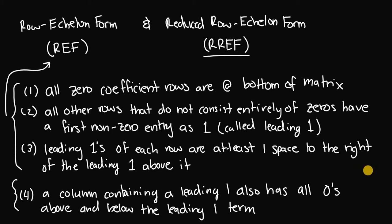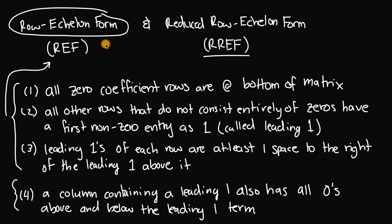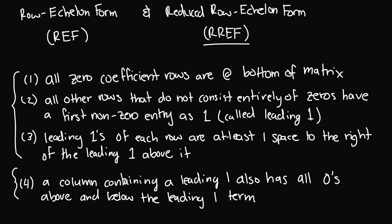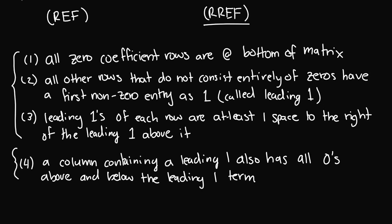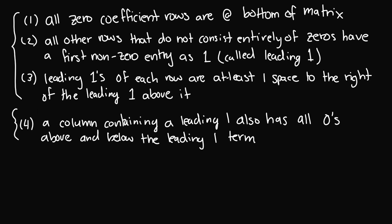We'll do examples to illustrate these rules and identify which matrices are in row echelon form, reduced row echelon form, or neither. If a matrix meets the first three rules, it is in row echelon form. If it also meets the fourth rule — all four rules — then it is in reduced row echelon form. The fourth rule is that a column containing a leading one also has all zeros above and below that leading one term.